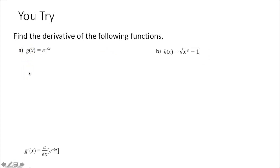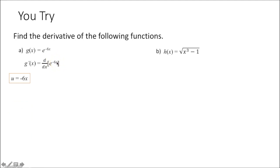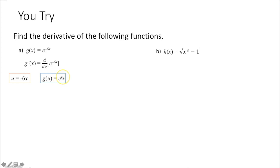Again, we're taking the derivative of a composite function. We have a function, negative 6x, within another function, e to this power. We need to recognize our innermost function, which is negative 6x, and our outermost function, which is e to the u, after we set u equal to negative 6x. The chain rule says we take the derivative of our outermost function: the derivative of e to the u is e to the u, so it's e to the negative 6x, times the derivative of u, or the derivative of negative 6x.